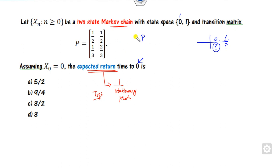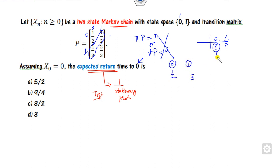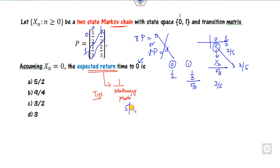How can you find the stationary probability? You know it satisfies π P = π, but there is no need to solve them fully. Whenever there is a two-by-two matrix and the row sums are one, you can always pick the off-diagonal entries. The first off-diagonal element and the second give us: the stationary probability of state zero is the off-diagonal value divided by the sum, giving three by five, and for state one it is two by five. So the expected return time to state zero is five by three — that is the right answer.